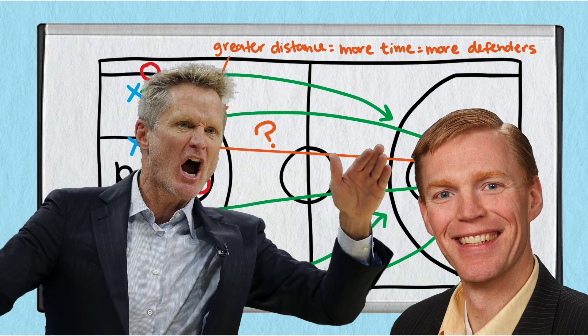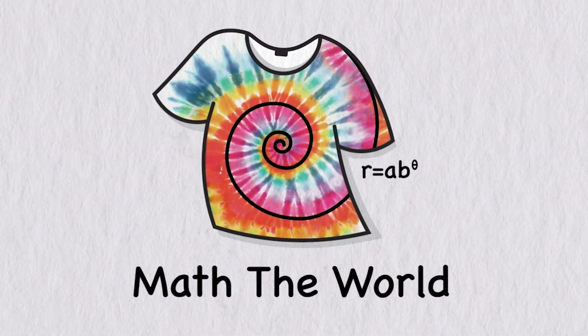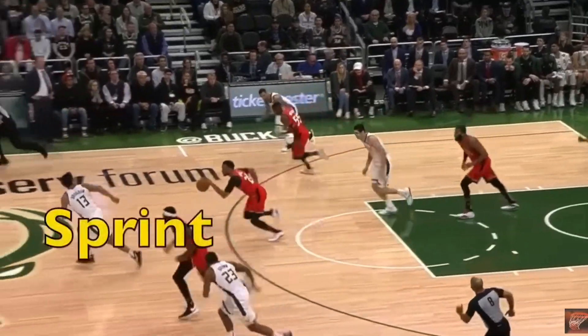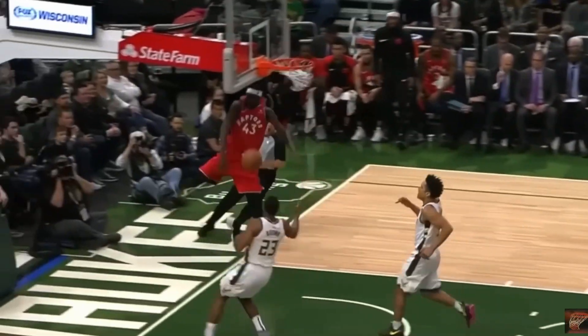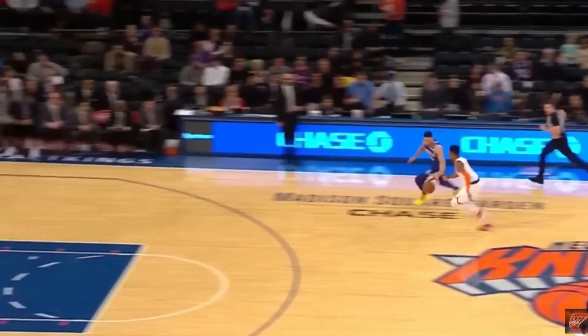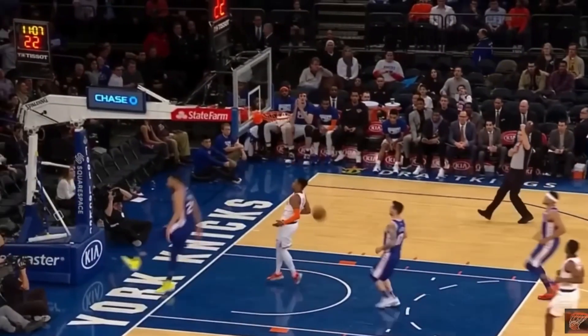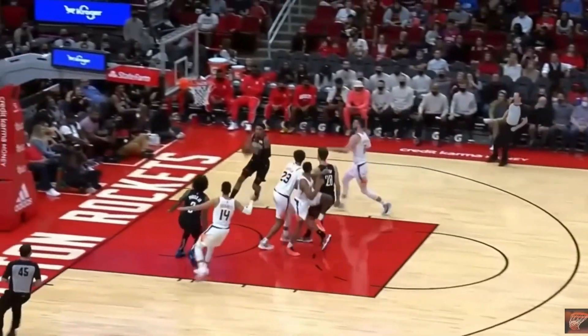Let's do the math and find out. First, there are times when running down the middle is the right choice. For example, when the ball ends up wide, you can still spread the floor and get a good angle for a pass. Or of course, if you're the one with the ball and you can beat people to the basket. But let's focus on the more common situation when the ball is coming up the middle.